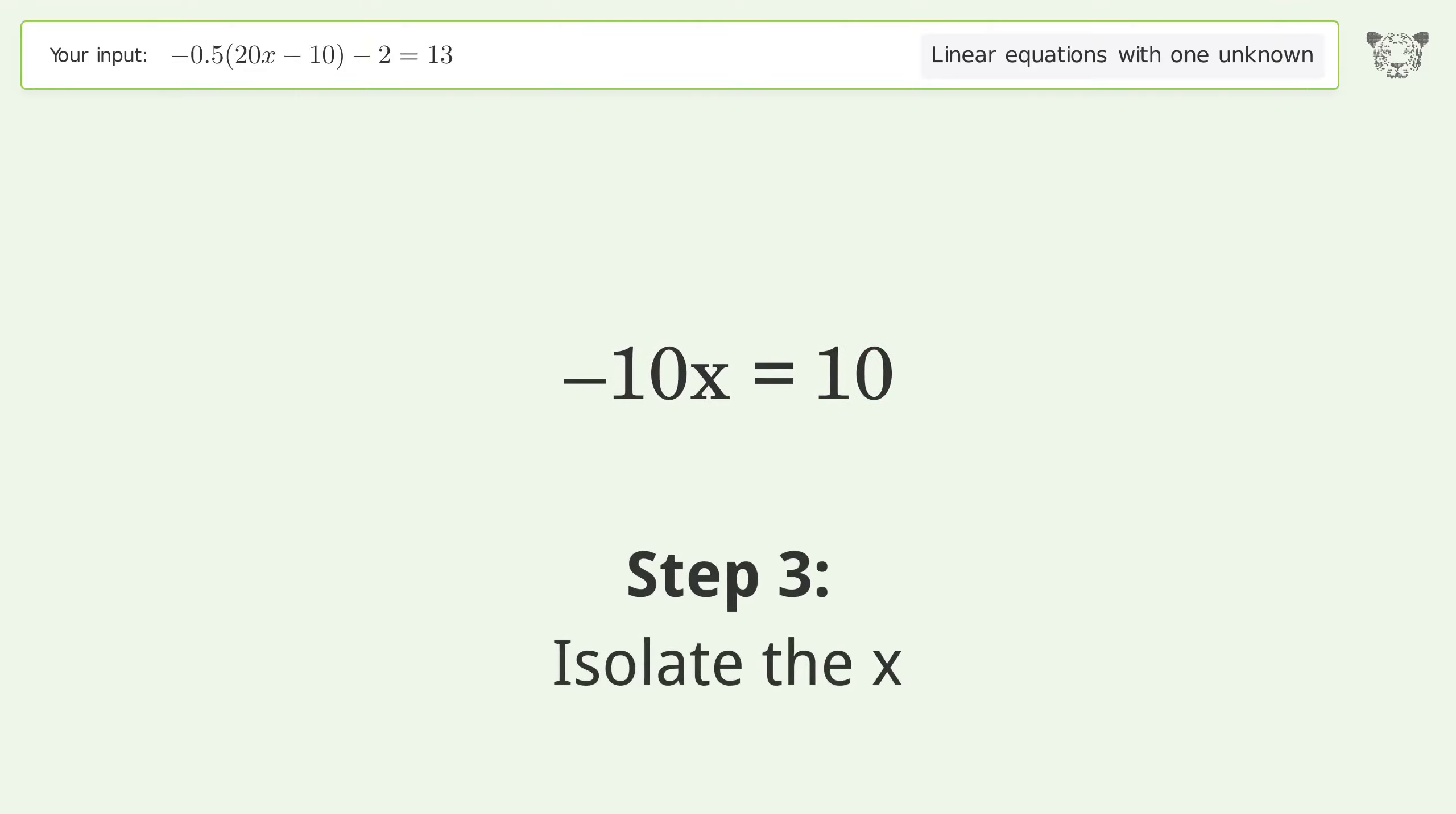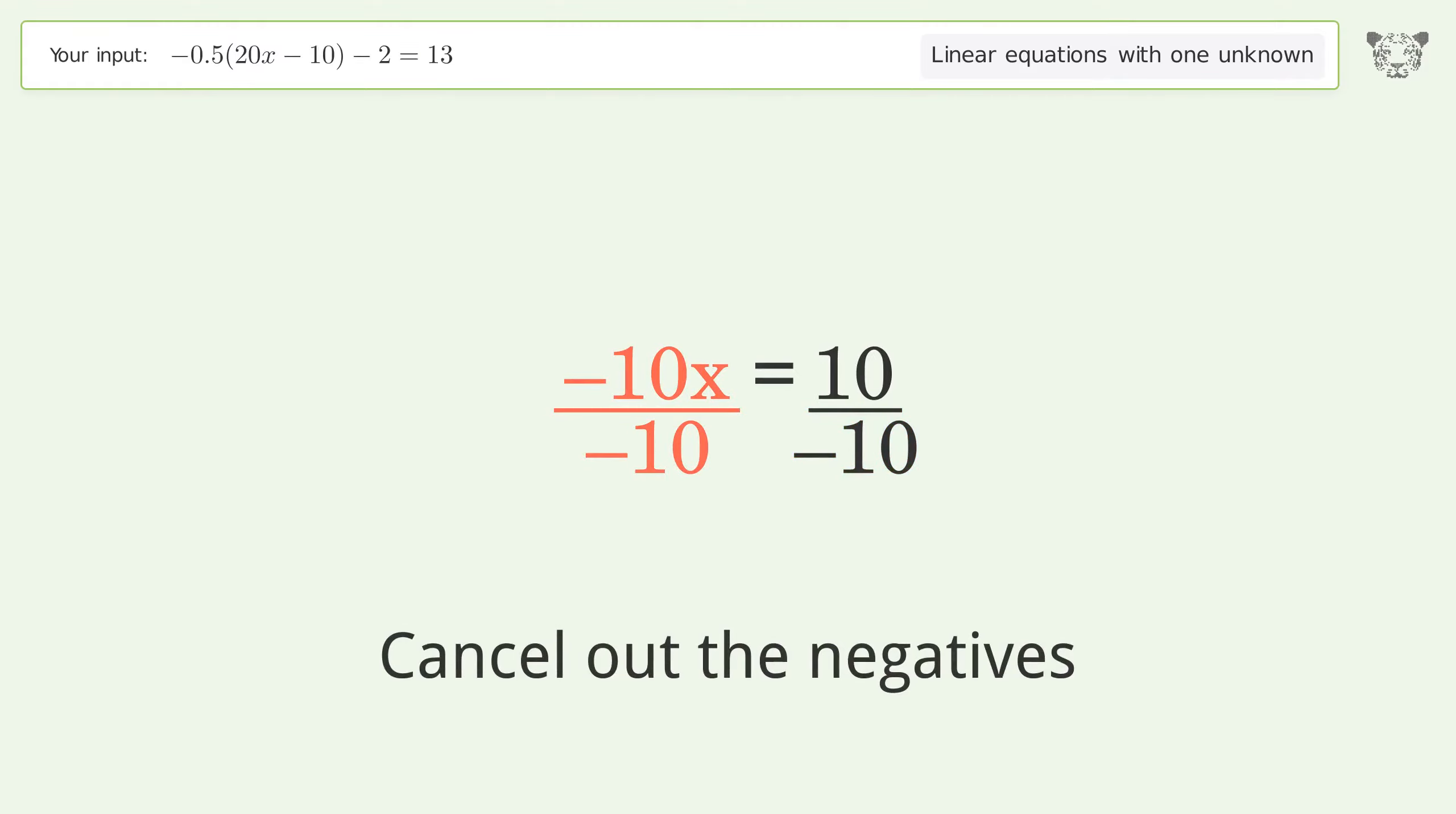Isolate the x. Divide both sides by negative 10. Cancel out the negatives.